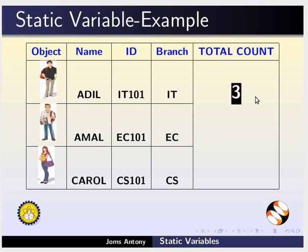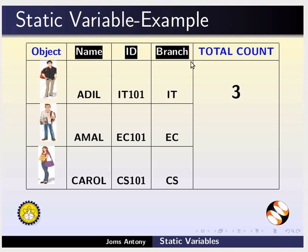We can also see that the variables name, id and branch have their own copies for each object. Also they have specific values for each object. So these variables can be treated as instance variables.